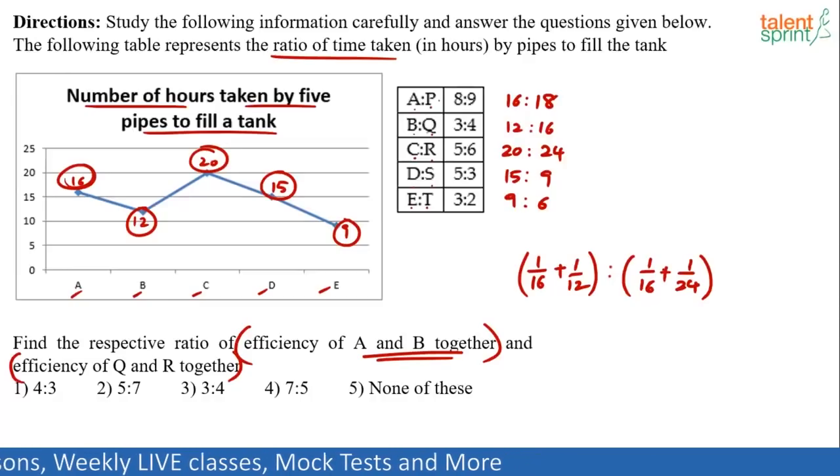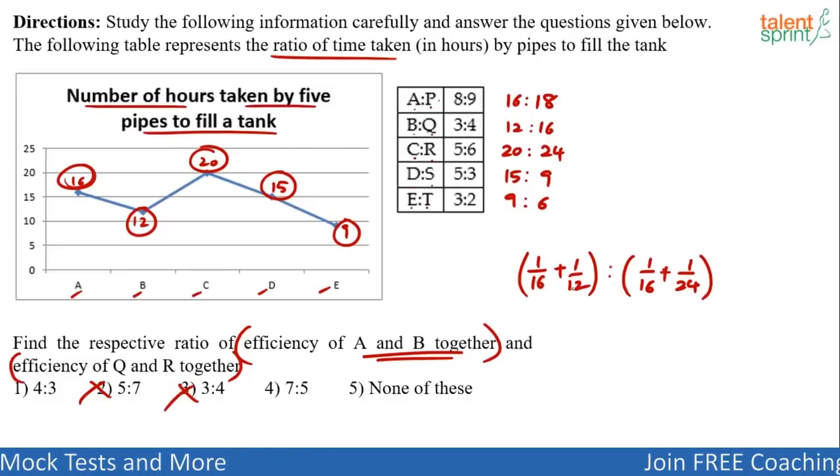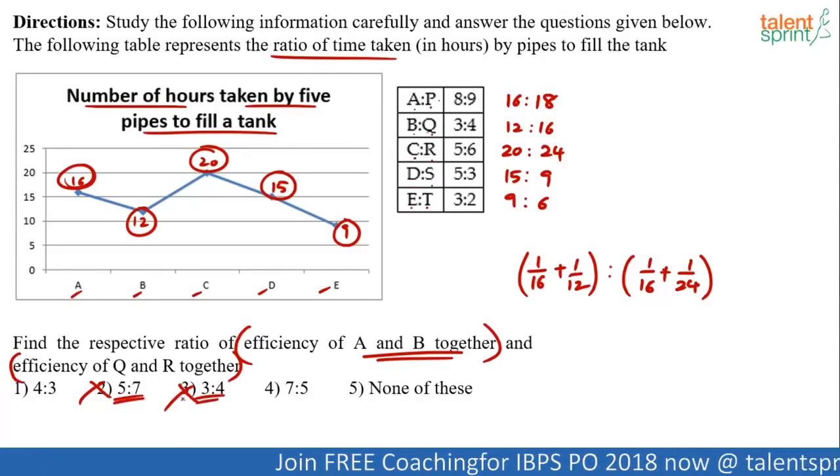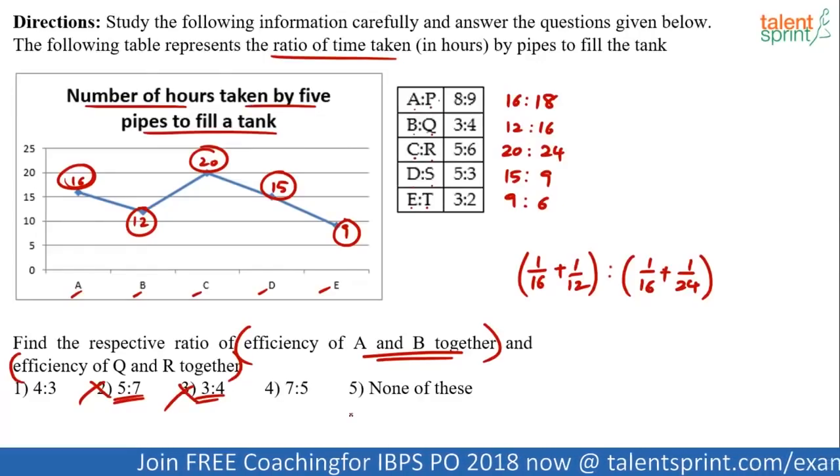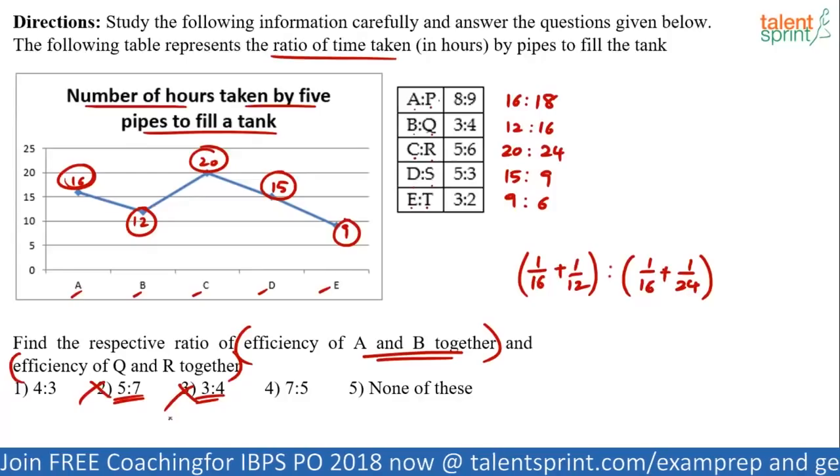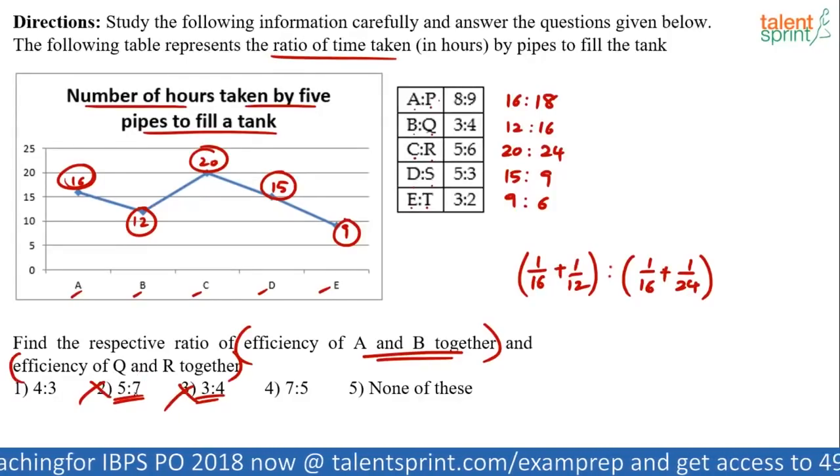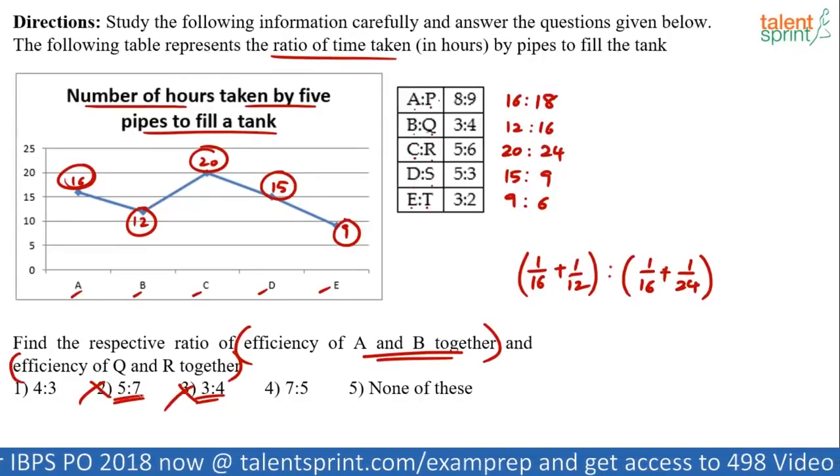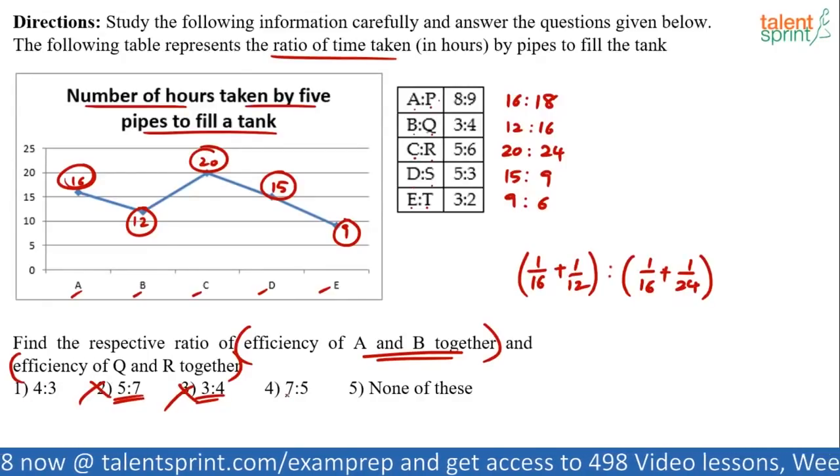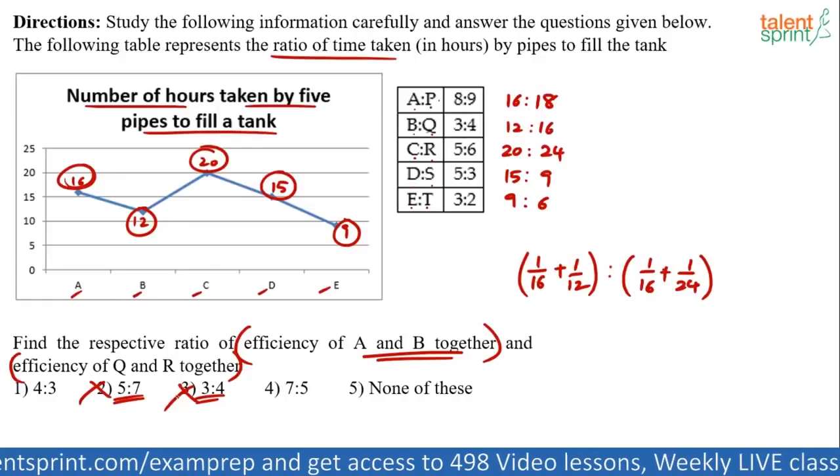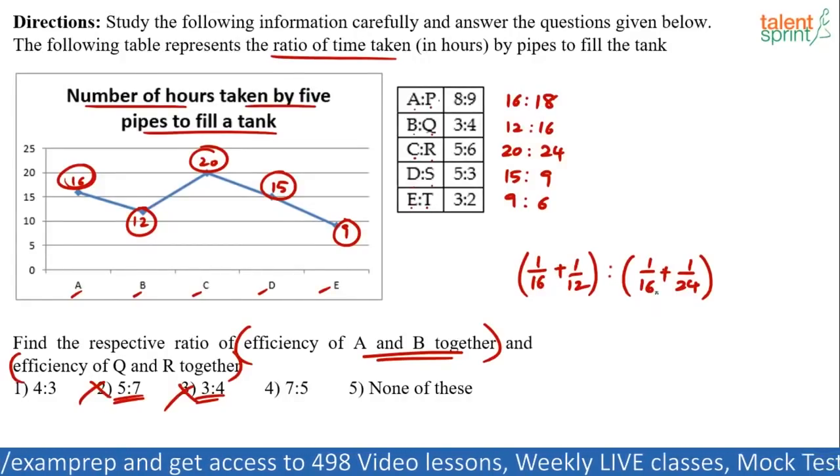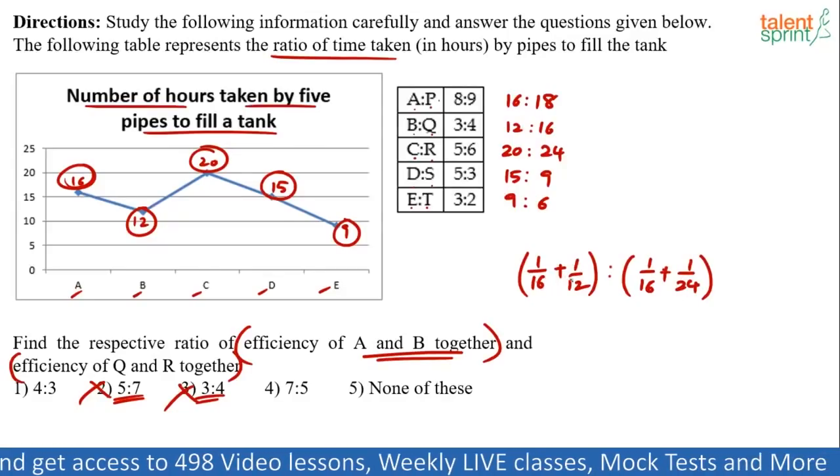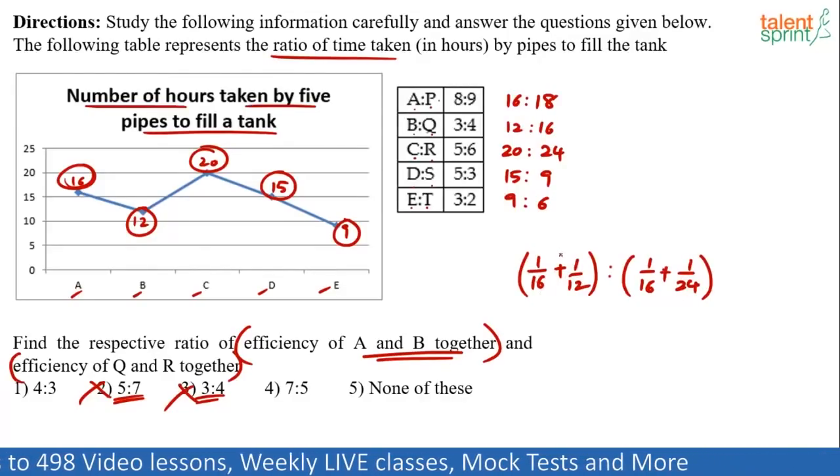Smartly, I can say immediately option 2 and option 3 cannot be the answers because the first value is going to be more than the second value. See, 1 by 16, 1 by 16 is same. 1 by 12 is more than 1 by 24. So, overall, the first term is going to be more than the second term. In option 2, we have first term less than second term. In option 3 also, we have first term less than second term. It doesn't help. We have to do the further calculation. But at least stupid answers should not be marked. Even if you want to make a guess, you cannot mark 5 is to 7 or 3 is to 4. If you want to take a chance, mark either option 1 or option 4. But don't mark these things. Clearly, the first term is going to be more.